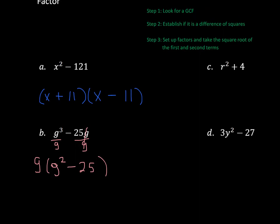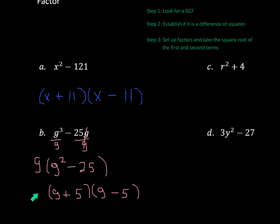Now establish if it's a difference of squares. Can I take the square root of G squared? Yes. Can I take the square root of 25? Yes. Is there a minus sign between them? Yes — all three questions are yes. So we open parentheses: square root of G squared is G in the first spot, square root of 25 is 5 in the second spot, one gets a plus and one gets a minus. Don't forget to bring the GCF of G out front in the final answer.